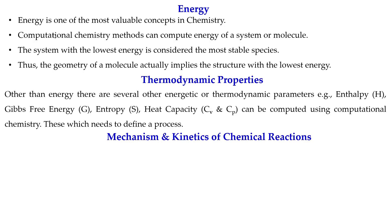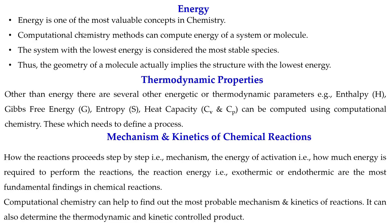Next is the mechanism and kinetics of chemical reactions. We are very much interested in knowing how a reaction proceeds step by step — that is called the mechanism. Also, the energy of activation — how much energy is required to perform the reaction — and the reaction energy, whether it's exothermic or endothermic, can all be computed. You can also define thermodynamic principles like whether your product is a thermodynamic control product or a kinetic control product. All of these physical organic chemistry concepts can be defined by computational chemistry.